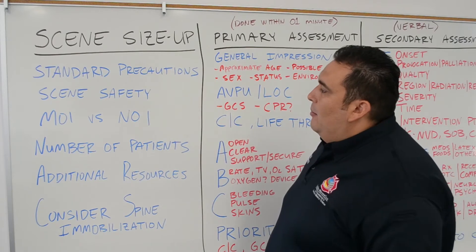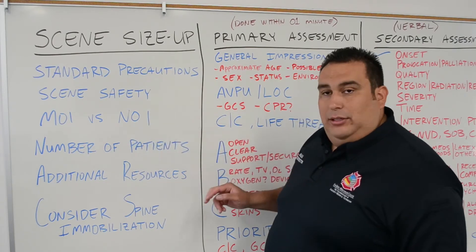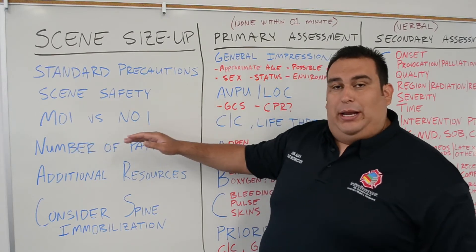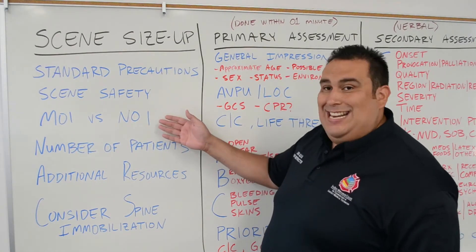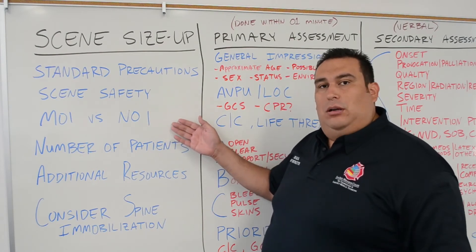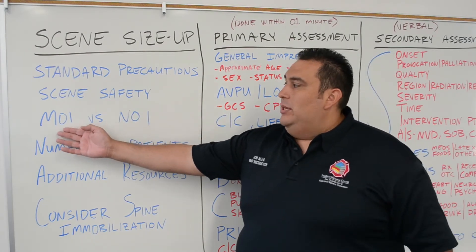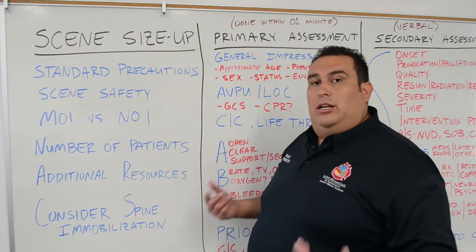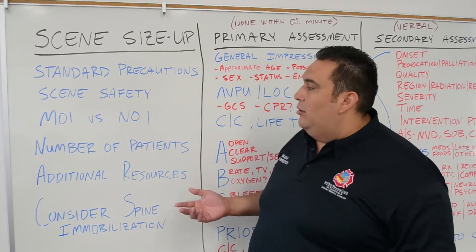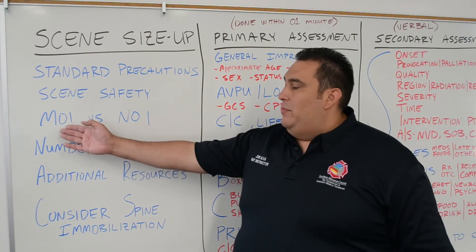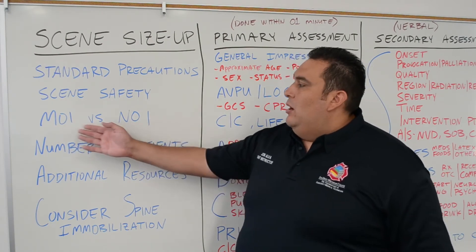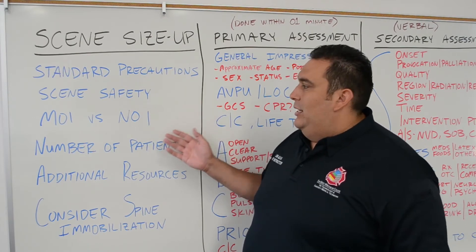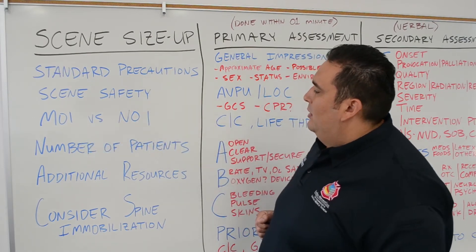For mechanism of injury and nature of illness, we're going to look at the type of call. Is it a chest pain? A chest pain typically sounds like a nature of illness, so more of a medical call. A vehicle collision would be a mechanism of injury — how the person was injured. A gunshot wound, stabbing, car crash, fall, or fight would be a mechanism. We have to determine which it's going to be. They can be mixed or blended together, but we're going to make a rough assessment of that.